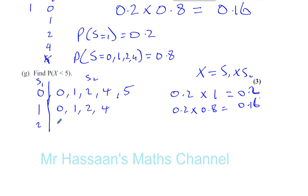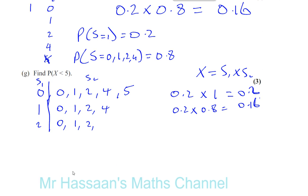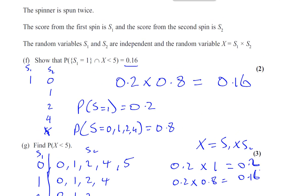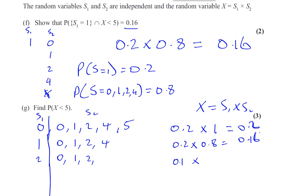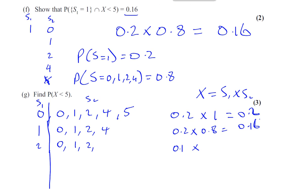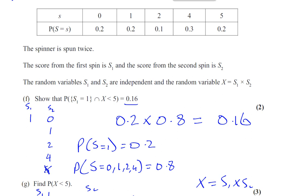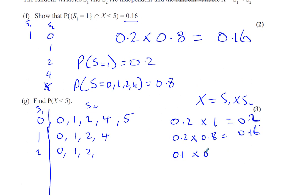If S1 = 2, you can get S2 = 0, 1, or 2, but not 4, because 2 × 4 = 8, which is not less than 5. The probability of getting a 2 is 0.1, times the combined probability of getting 0, 1, or 2 on S2, which is 0.2 + 0.4 = 0.5 — wait, that's 0.5. So 0.1 times 0.5 gives 0.05.